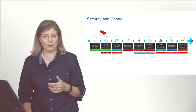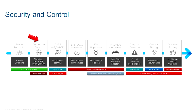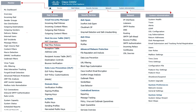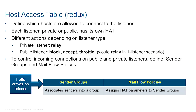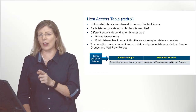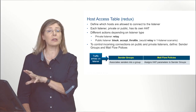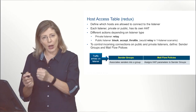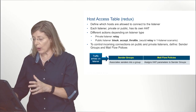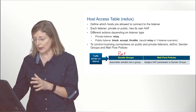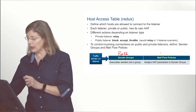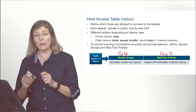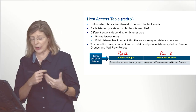What we're going to talk about with the mail flow policy is part of connection control. To adjust the mail flow policy, you go in the GUI under Mail Policy, then under Mail Flow Policies. Let's have a look again at the host access table — this is the same slide from the previous recording, brought back to help us see what we're focusing on. In part one we discussed sender group; now in part two we're talking about mail flow policy.